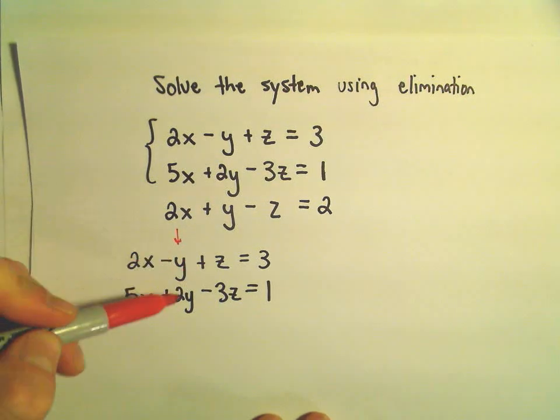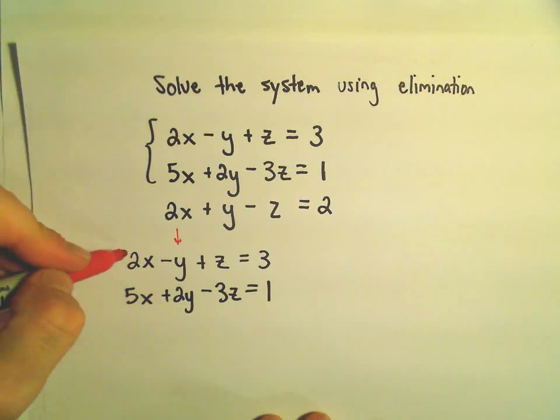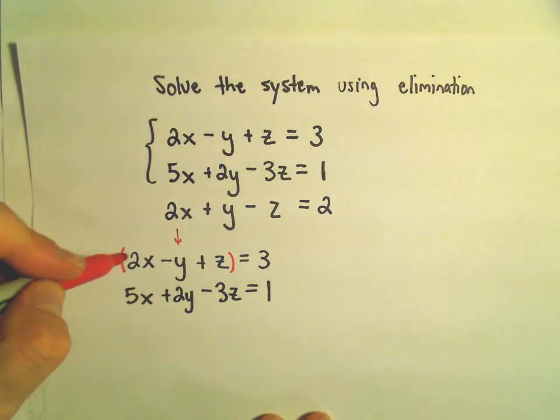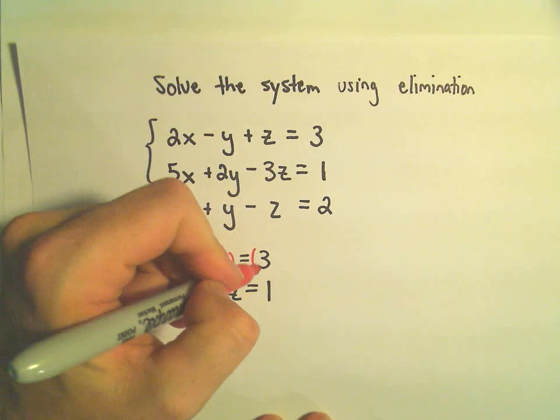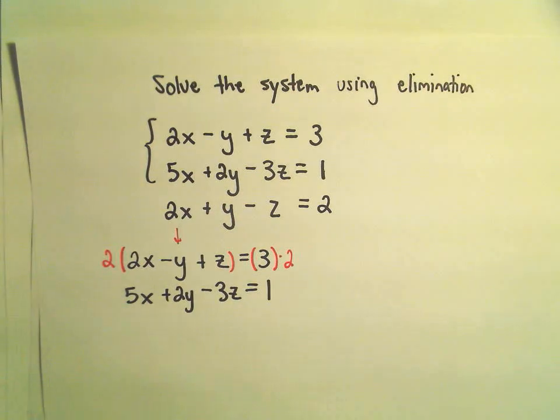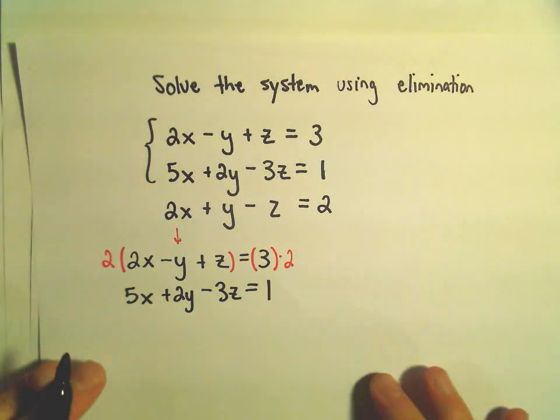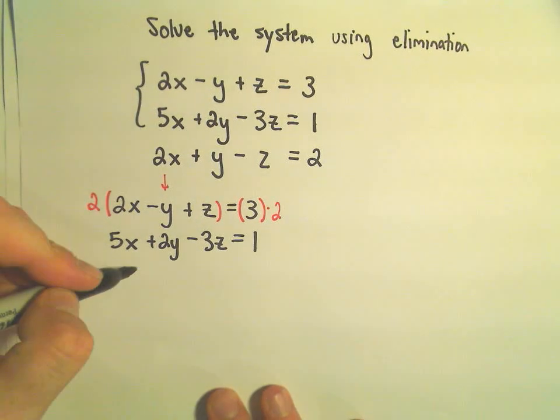Well, I think if I have a negative 2y, then when I add 2y, everything would cancel out, so I'm going to have to multiply my first equation by 2, both sides of it. That's going to give us, so if I distribute, 2 times 2x will be 4x,